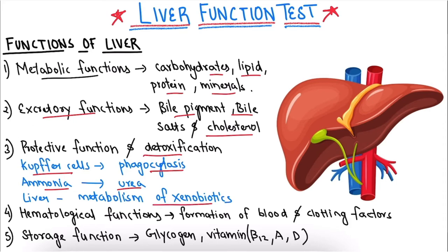The fourth one is the hematological functions. The liver is involved in the formation of blood and clotting factors. The fifth one is the storage function. The liver stores glycogen, vitamin B12, vitamin A and vitamin D.